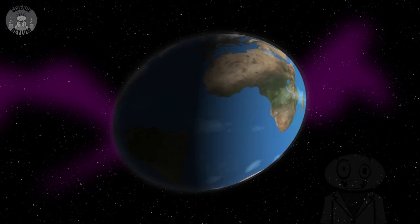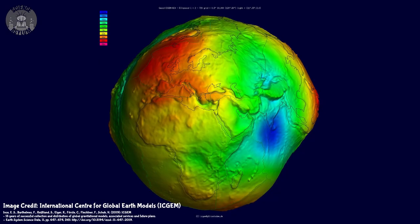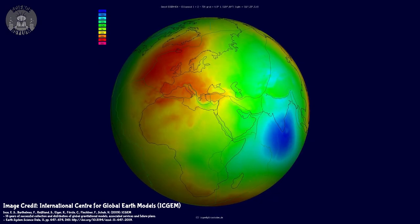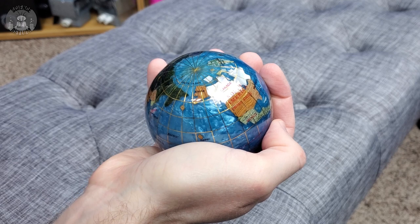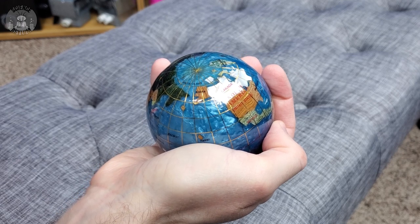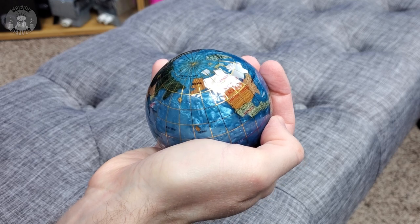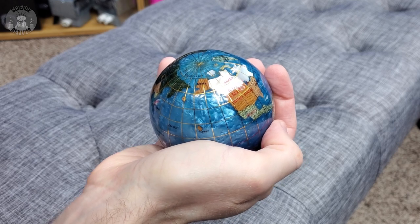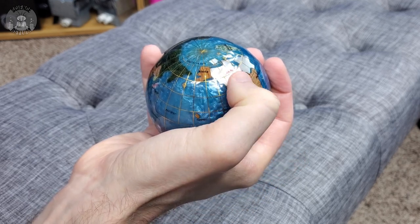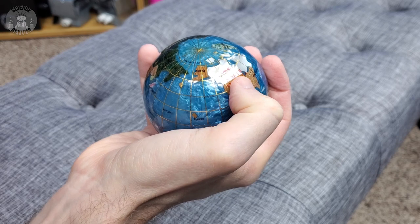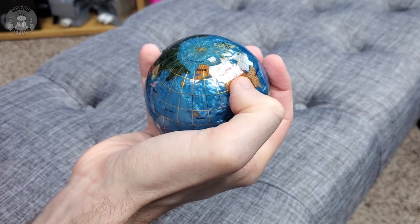The Earth's oblateness? Exaggerated. The Earth's geoid? Exaggerated. If you were holding the Earth in your hand, it would feel like a perfectly smooth ball — maybe a little soft and a little wet, but that's it. But if you're rubbing it, you could at least tell that some parts of it were rougher than others.